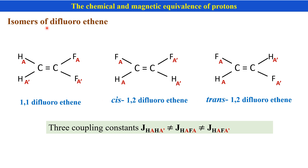Next we see the examples of difluoroethene. The first is 1,1-difluoroethene. In that case also, both the proton and the fluorine nucleus are magnetic in nature.